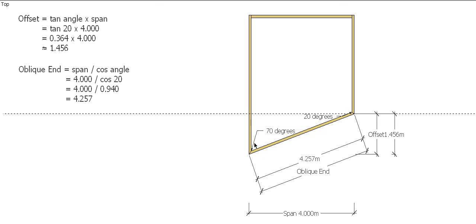So what you do is you take your span which as I said before is 4 meters, you divide that by cos, and the angle again is 20 degrees. So 4 divided by cos 20 gives us 4 divided by 0.940, which gives us a distance of 4.257. And that's the distance of our oblique end. If you did Pythagoras you'd end up with exactly the same answer.